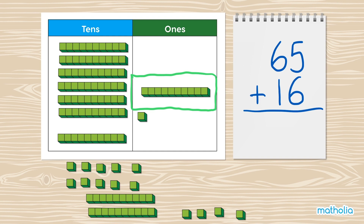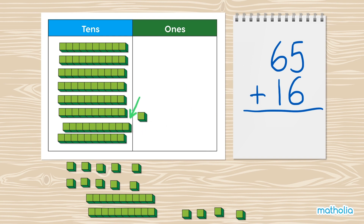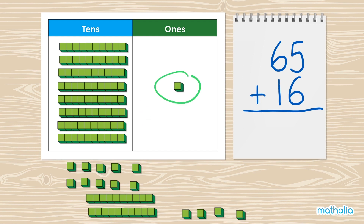We can move the 10 block over to the tens column in the place value chart. There is one 1 left. Write 1 in the ones column, and write a 1 in the tens column to show the 10 block that we put there.